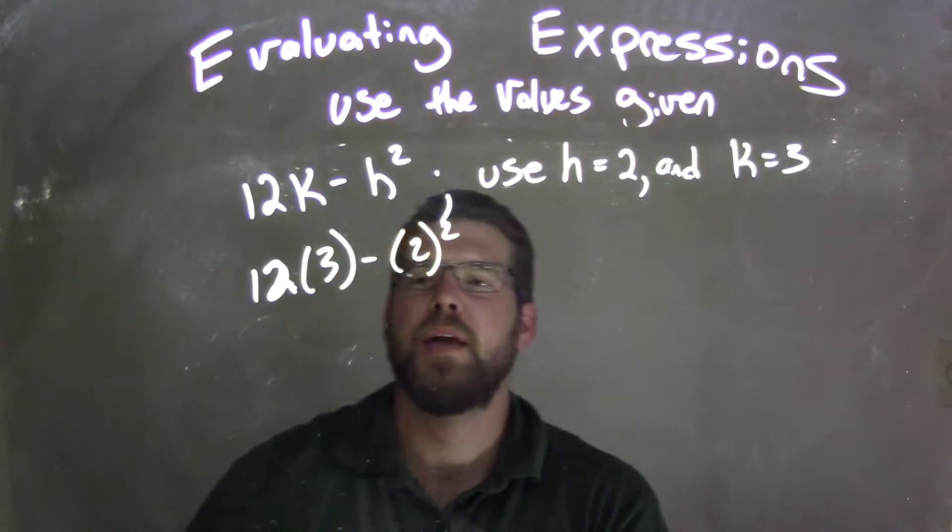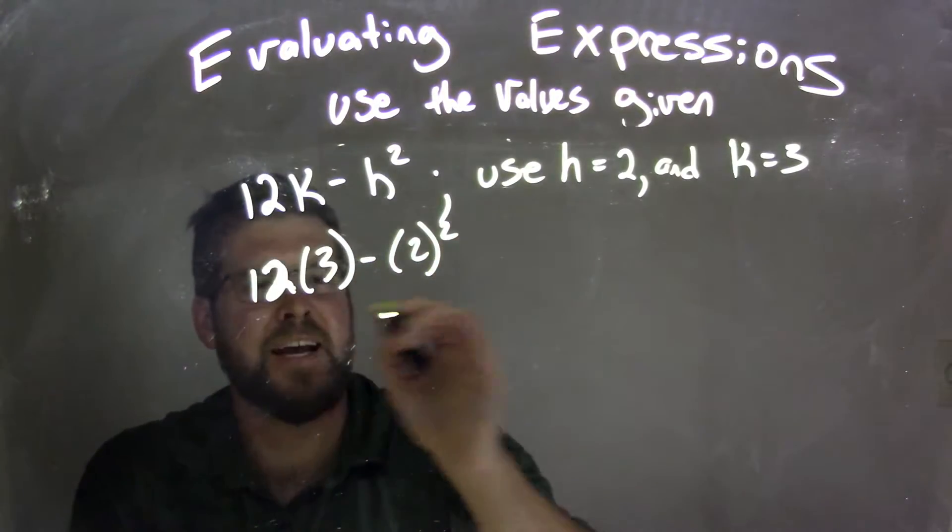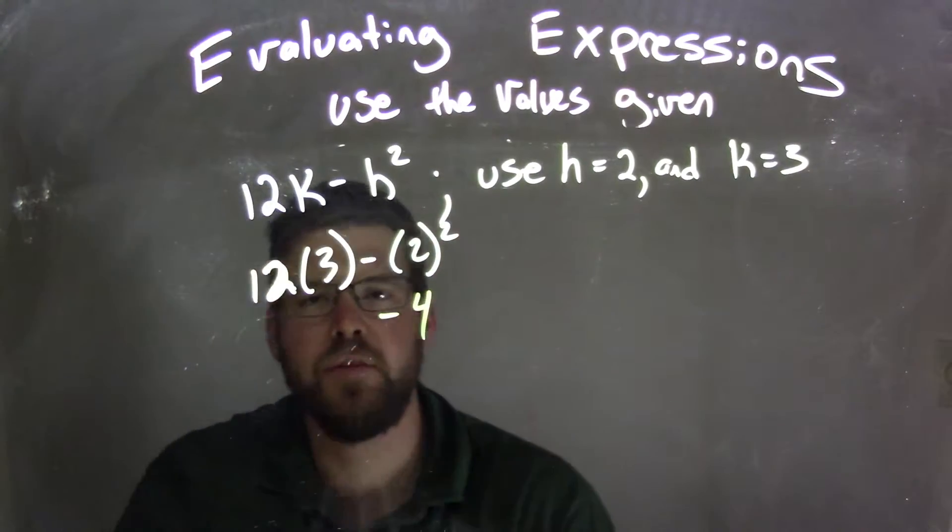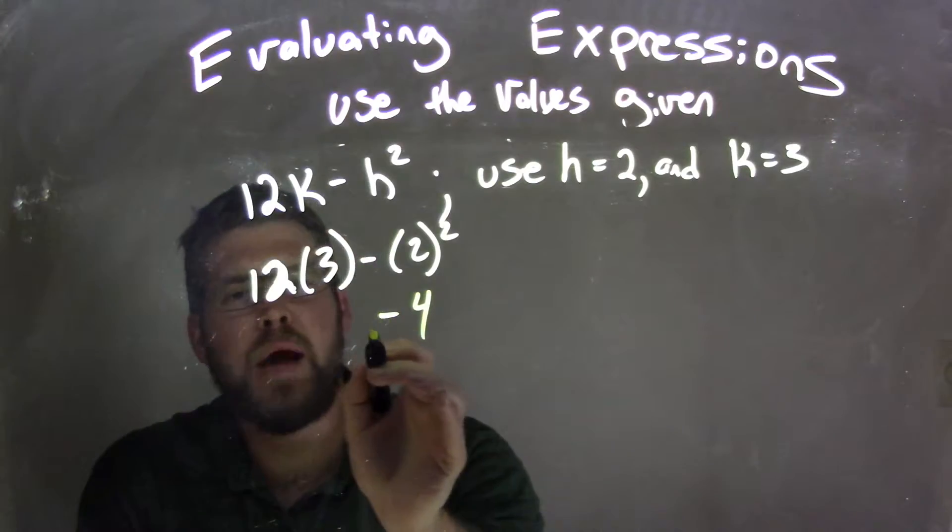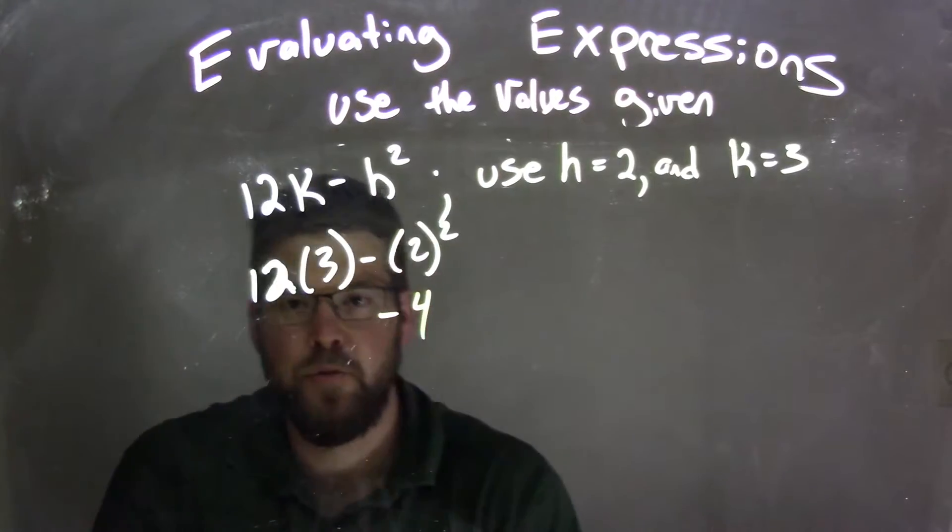Well, now multiplication and exponents we have to deal with, with subtraction in the middle. So 2 to the second power is 4, right, exponents. And then since we're separated by the subtraction sign, I can do the 12 times 3 first, and 12 times 3 is 36.